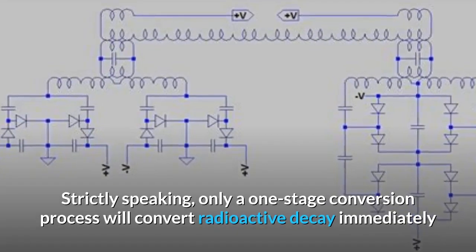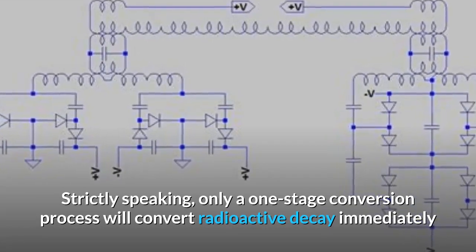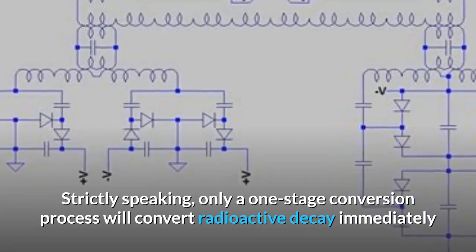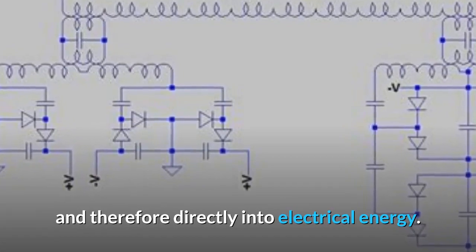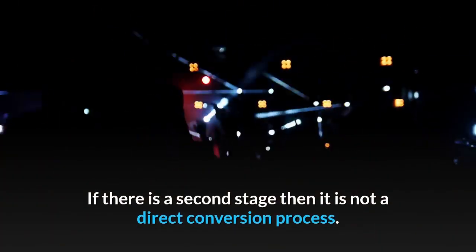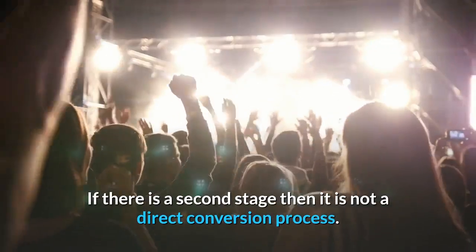Strictly speaking, only a one-stage conversion process will convert radioactive decay immediately and therefore directly into electrical energy. If there is a second stage then it is not a direct conversion process.